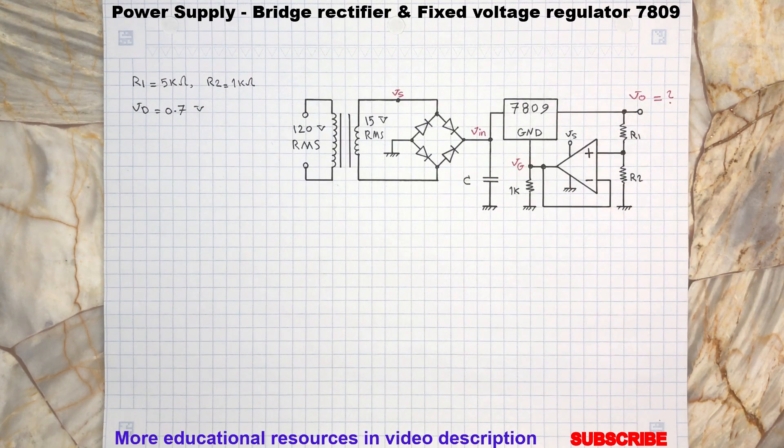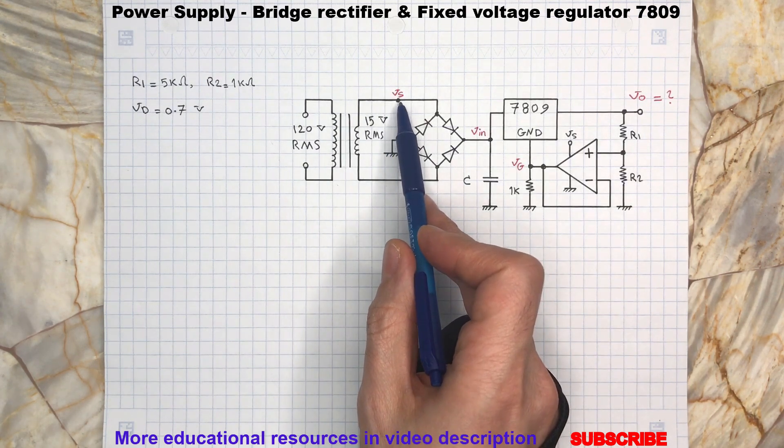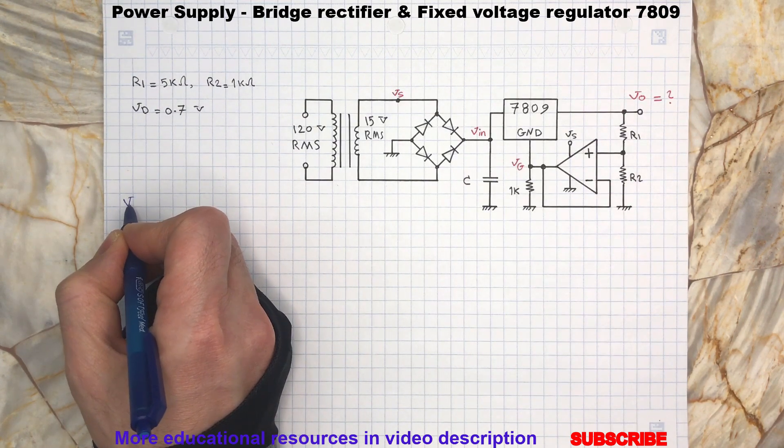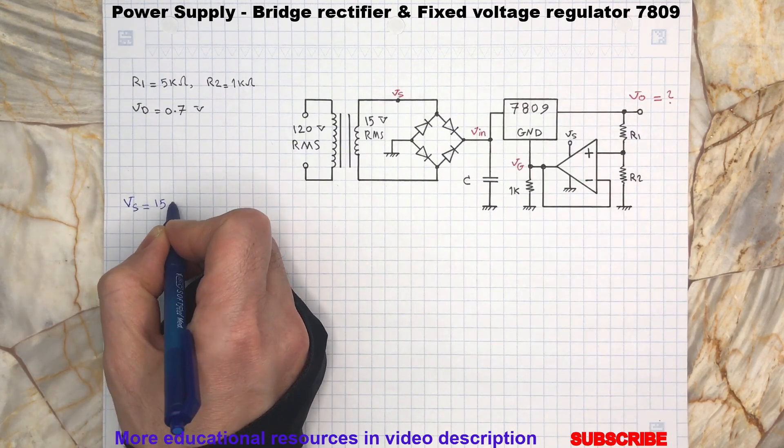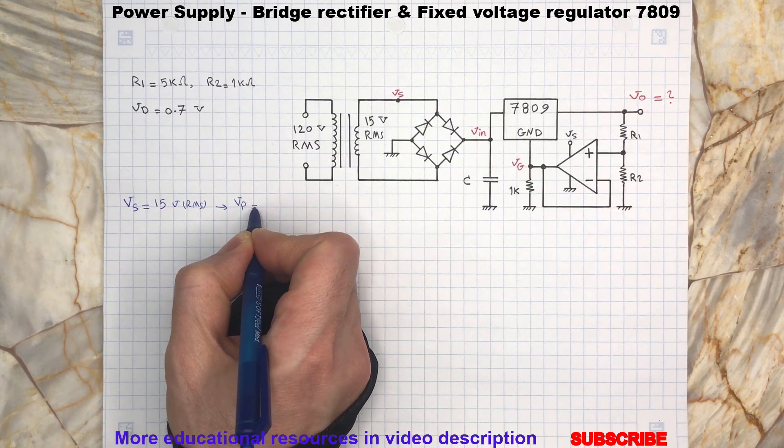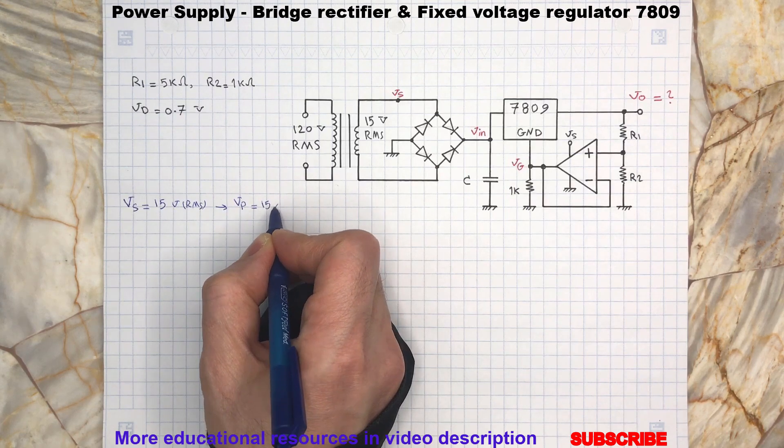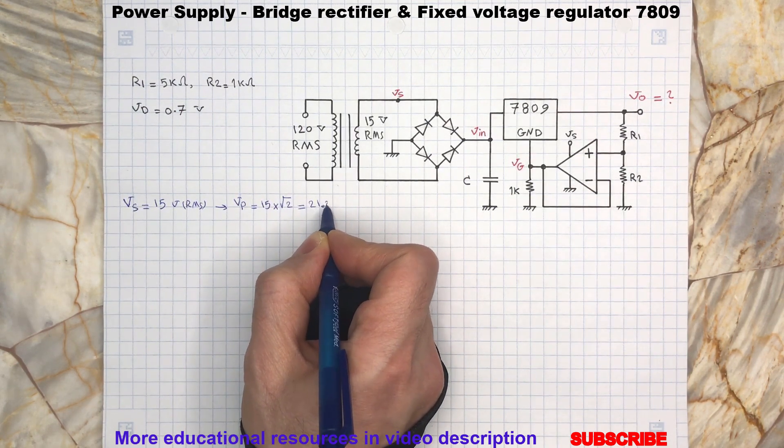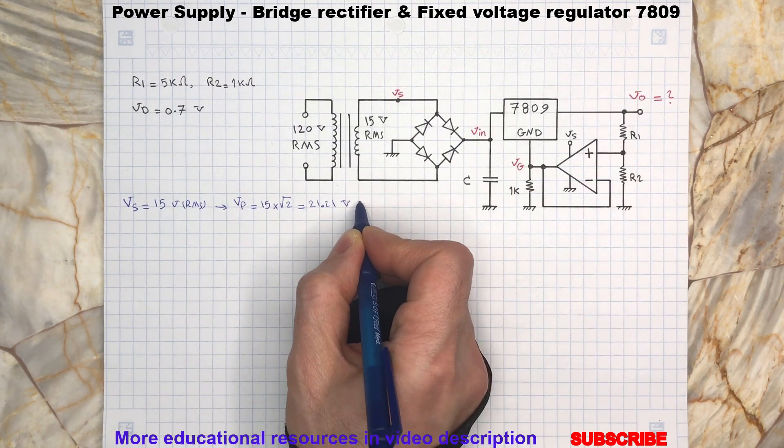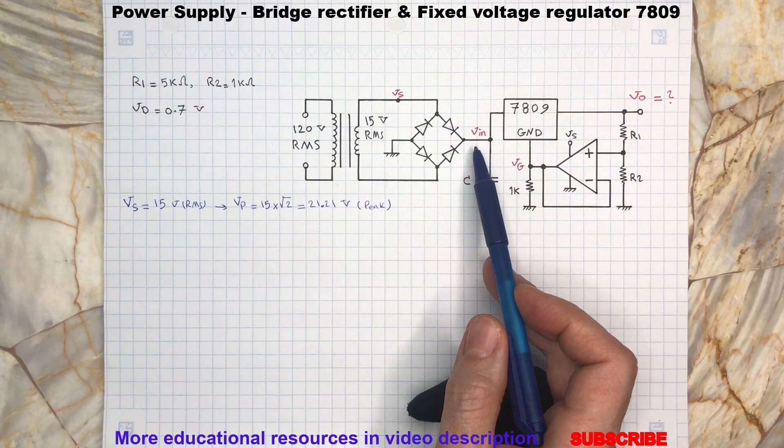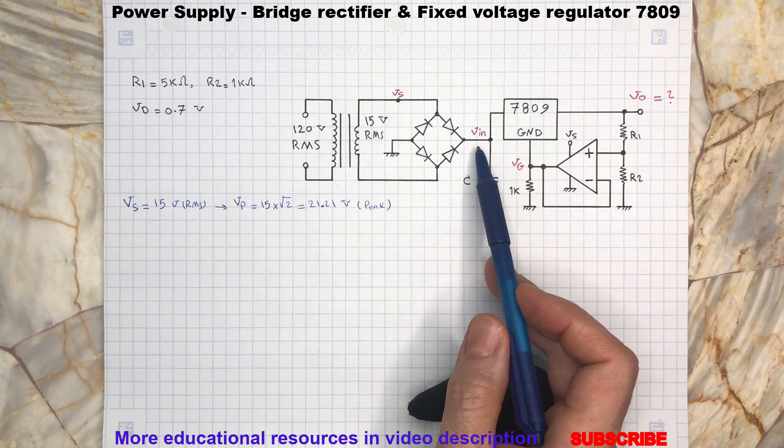Now let's calculate the peak voltage also known as maximum amplitude at VS terminal. And the maximum peak voltage at Vin terminal after passing through the bridge diode will be...